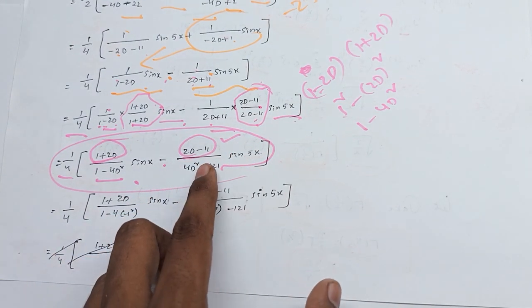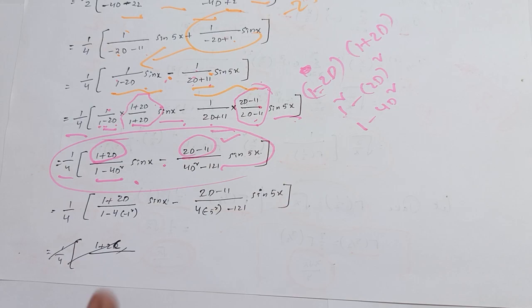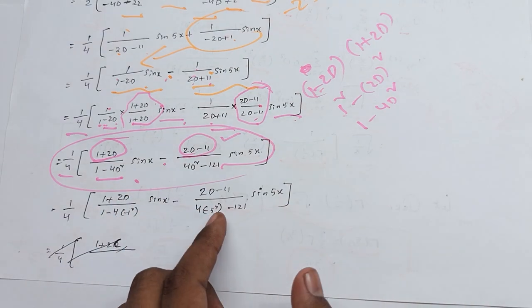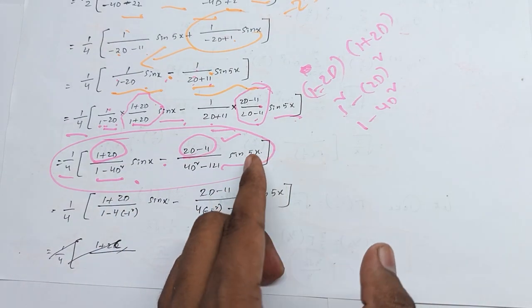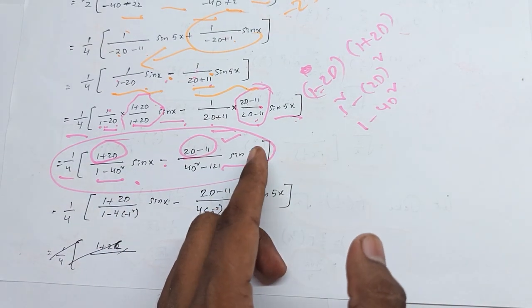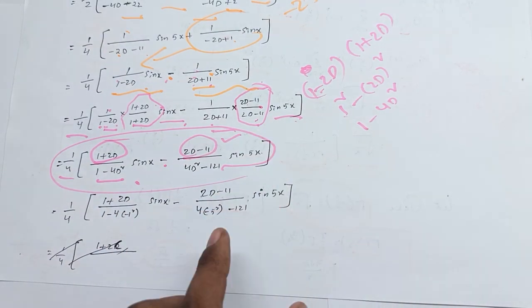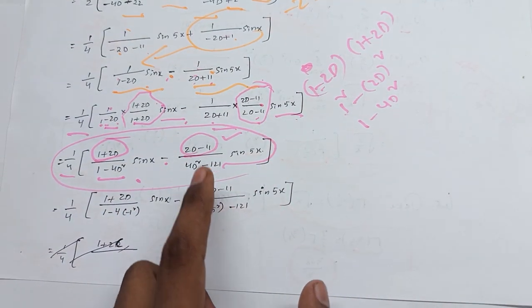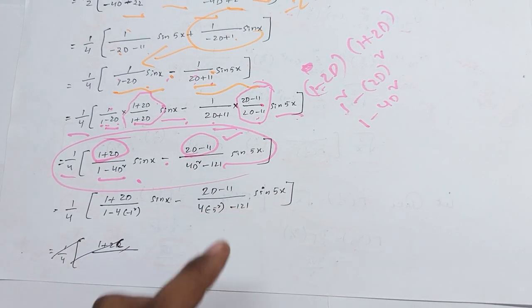So 4 times D squared gives 4 times minus 25 equals minus 100. Minus 121.